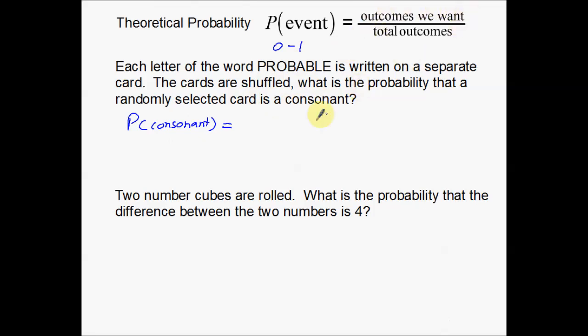Those are the outcomes that we want. If I randomly select a card, I want P, I want R, I want B, I want B, or I want L. I want one of these five different cards. I usually abbreviate this as want over total.